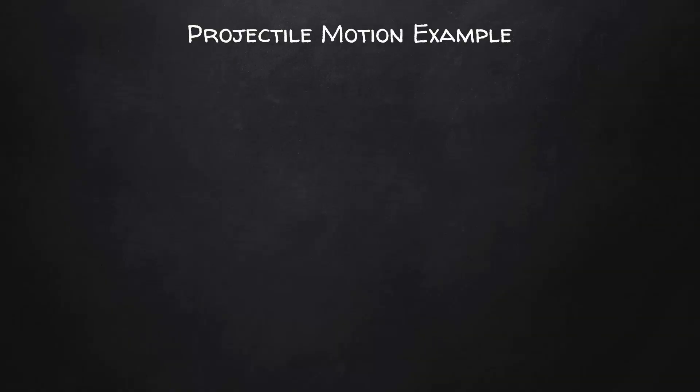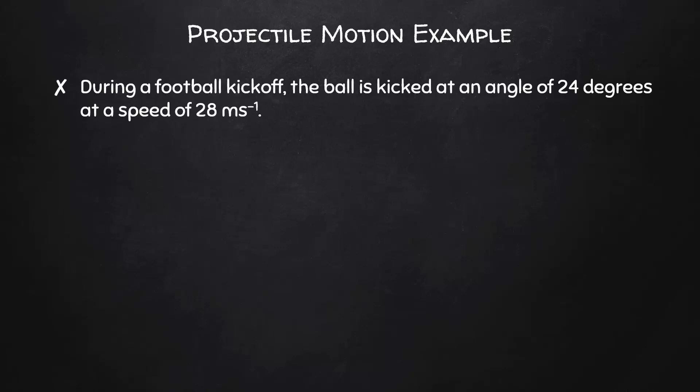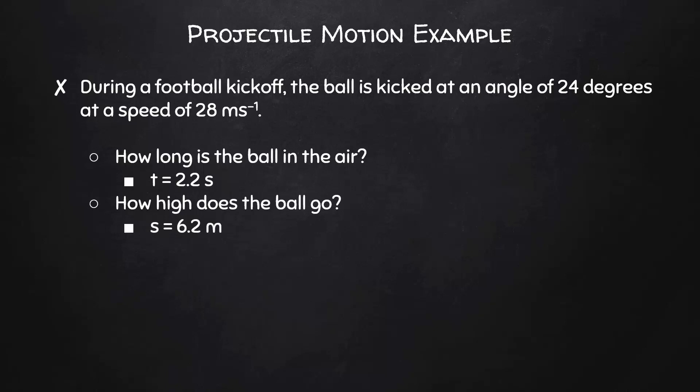Here's a projectile motion example for you. During a football kickoff, the ball is kicked at an angle of 24 degrees at a speed of 28 meters per second. First, calculate how long the ball is in the air. You should find a time of 2.2 seconds. Next, how high does the ball go? You should calculate a vertical displacement of 6.2 meters. Finally, how far away does the ball land? You should calculate a horizontal displacement, or range, of 56 meters.